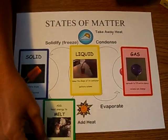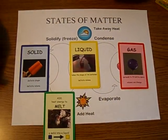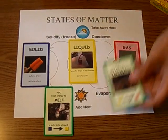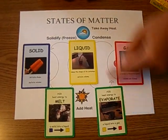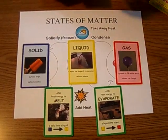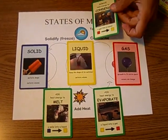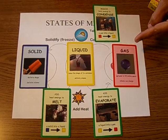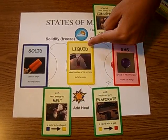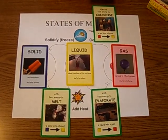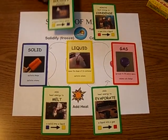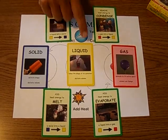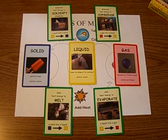Melt changes a solid into a liquid. Evaporate changes a liquid into a gas. Condense changes a gas back into a liquid. And solidify or freeze changes a liquid into a solid.